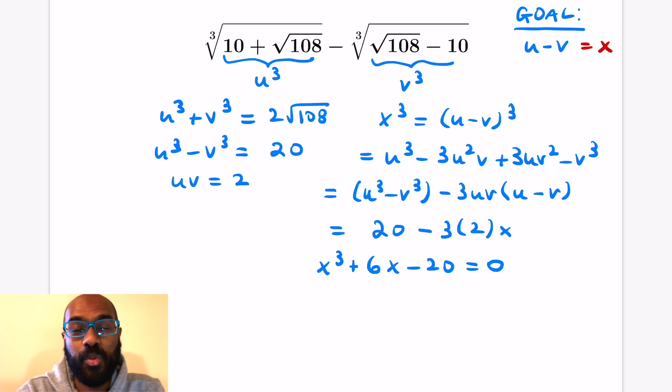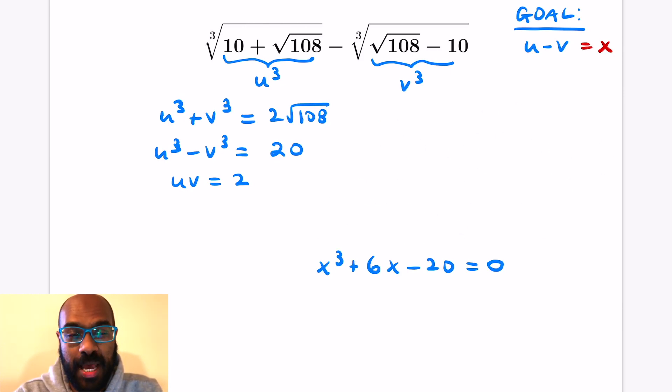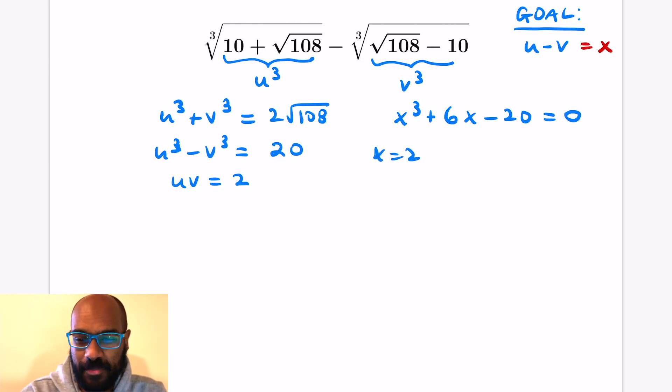We're looking for the real solutions of this cubic equation. We find out what those are, those are candidates for what x must be. So let's play around and see what the real solutions of this cubic equation are. So x is 2 actually works. One thing you can do is test out factors of 20. This is like the rational roots theorem. If we plug in 2, we get 2 cubed plus 6 times 2 minus 20, which actually works out to 0. So 2 is a solution.